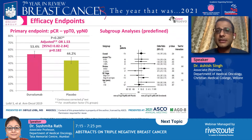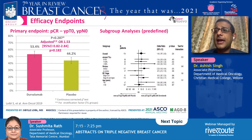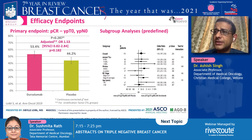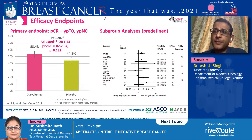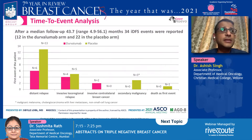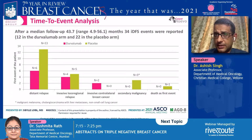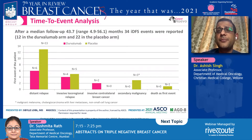This trial was previously published in 2019 with the pCR data. When Durvalumab was added, pCR went up from 44% to 53.4%. The forest plot showed benefit of pCR in almost every subgroup, and patients who had the window — one dose of Durvalumab given before chemotherapy — seemed to derive more benefit. When the study was presented at the last ASCO meeting, the authors presented event data showing distant relapses of 13 versus 6 in the placebo group — a substantial difference.